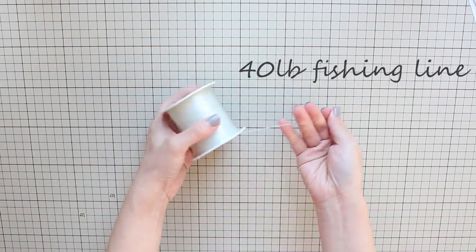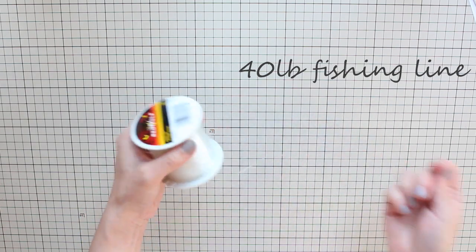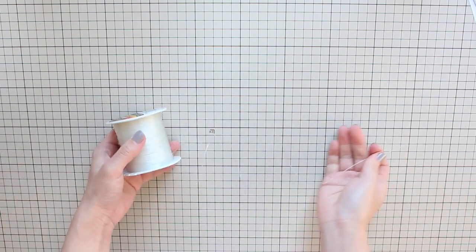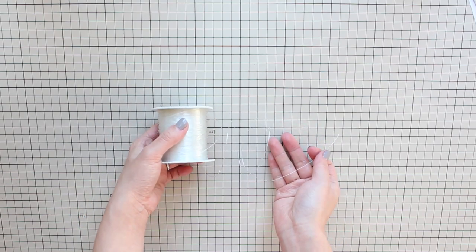40 pound fishing line. This is optional as well but it helps define the curls. It's really cool. I'll show you how to do that in a minute.